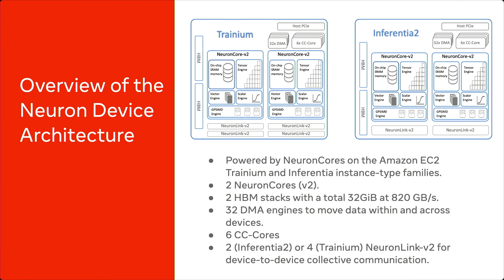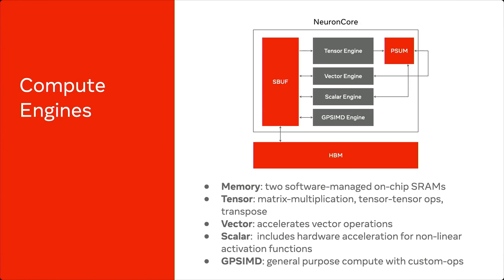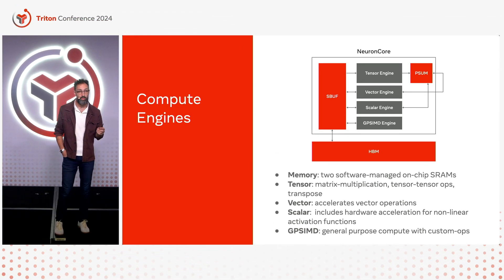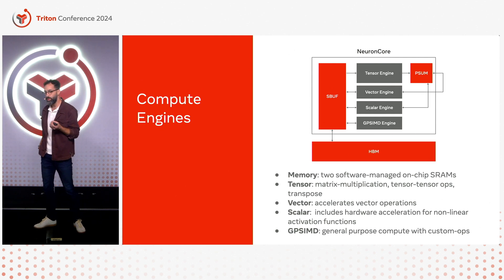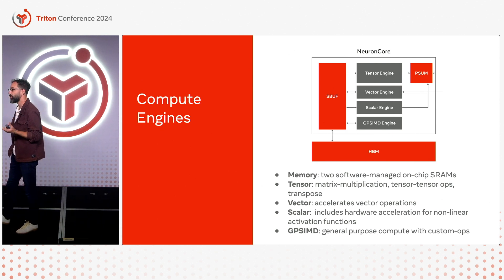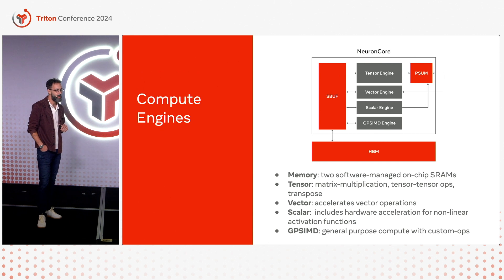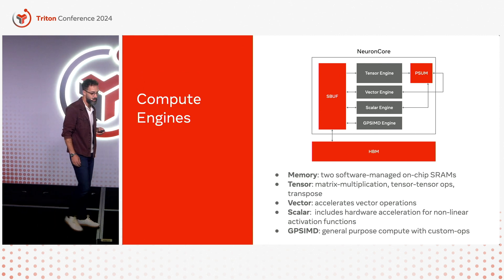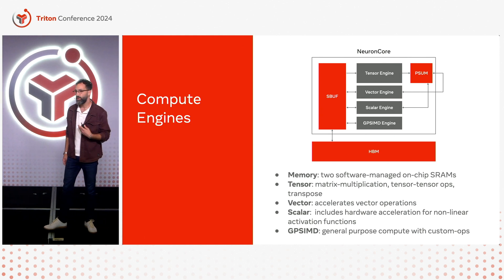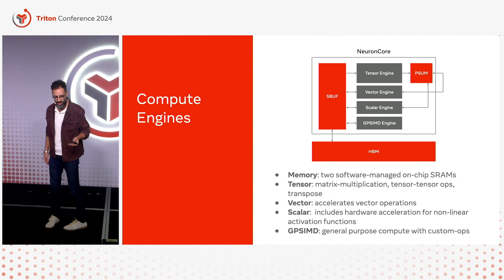From a programming perspective, what's really interesting is the compute engines. As we zoom in on the compute engines, we see we have two software-managed on-chip SRAMs: the SBUF and the PSUM. The SBUF is 24 megabytes and serves as the main data storage, and a 2 megabyte PSUM serves as a dedicated accumulation buffer for the Tensor Engine. Both SBUF and PSUM are considered two-dimensional memories with 128 partitions each. The Tensor Engine is specifically designed to accelerate matrix multiplications, as well as other operations built on matrix multiplications, such as rotations and convolutions.